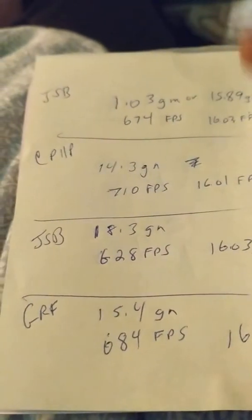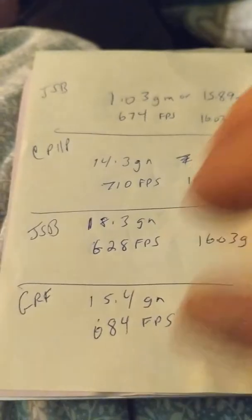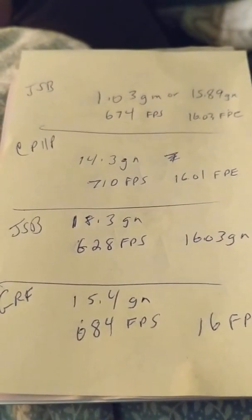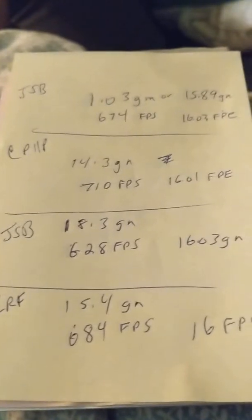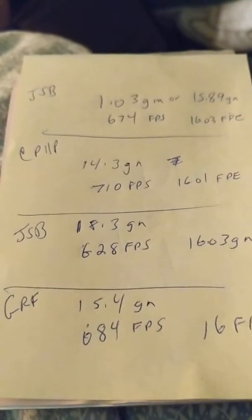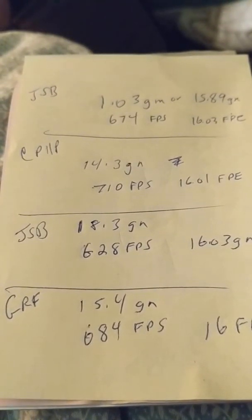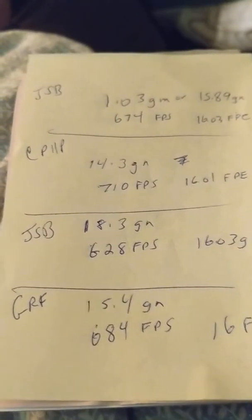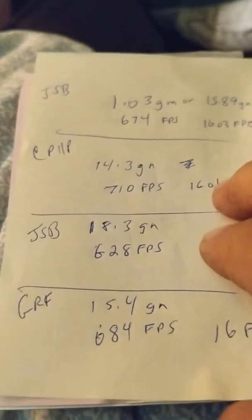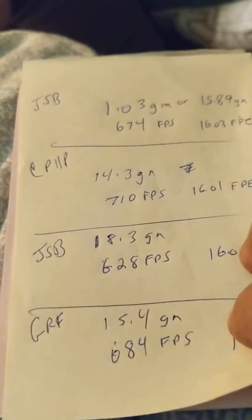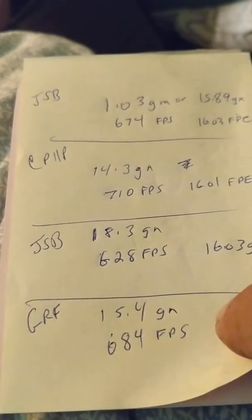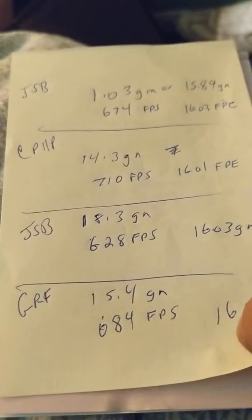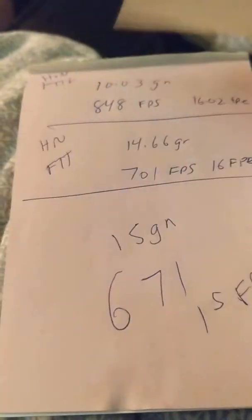With JSBs, 1.03 gram, which is also equivalent to 15.89 grain, they have to go 674 feet per second. All these are to reach 16 foot-pounds of energy. The Crosswind Premier hollow points, 710 feet per second. The JSB 18.3 grain is 628 feet per second, and the Gamma Redfire is 684 feet per second.